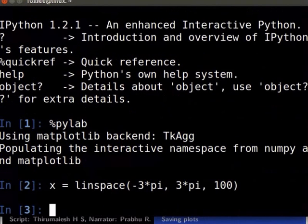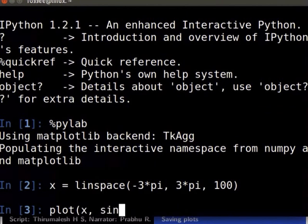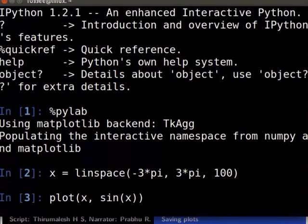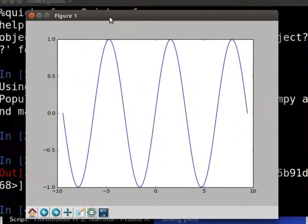Let us plot a sine curve for the points stored in variable x. Type plot(x, sin(x)) in the console and press enter.